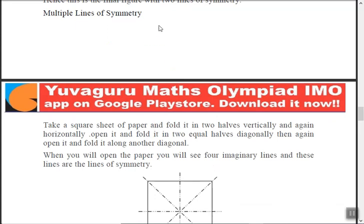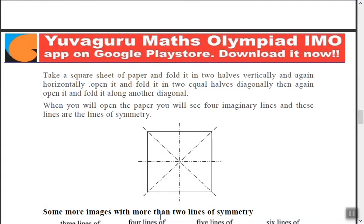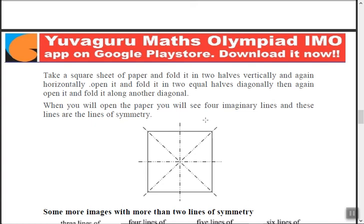Now multiple lines of symmetry — more than two. Look at a square: fold it on the diagonals as well as in the middle of the sides and you'll get the lines of symmetry. How many lines of symmetry does a square have? One, two — the verticals and horizontals — three and four — the diagonals. So a square has four lines of symmetry.